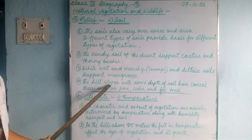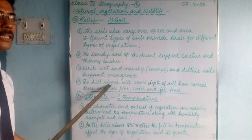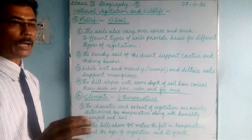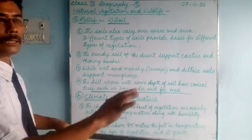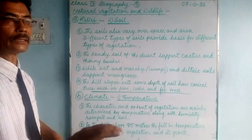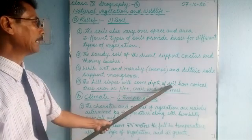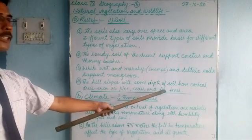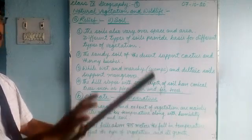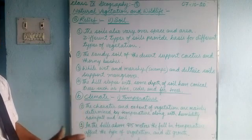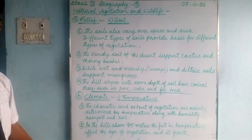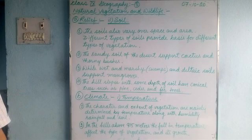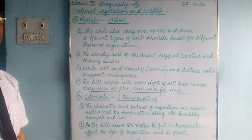In hilly areas — the hilly slopes of the Himalayas, the Western Ghats, or plateau regions — the layer of soil is very thin because of the slope, and most soil gets washed away. In areas where there is some depth of soil on hilly slopes, you find conical trees — cone-shaped trees such as pine, cedar, fir, silver fir, and deodar. These are the trees found on hill slopes where the depth of soil is a little more.